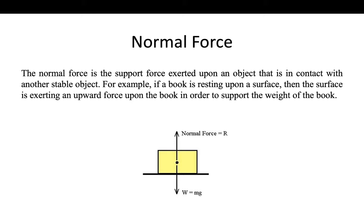The normal force is the support force exerted upon an object that is in contact with another stable object. For example, if a book is resting upon a surface, then the surface is exerting an upward force upon the book in order to support the weight of the book. The normal force simply means there is no special force — if a book is at rest on a desk, gravity is pushing it downward, and the normal force is cancelling the weight force, which is why it remains at rest.